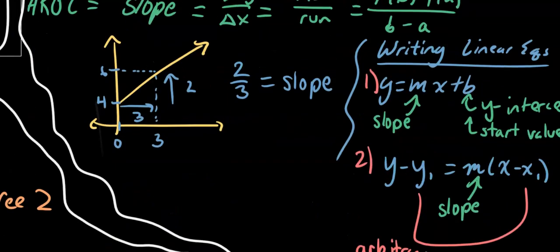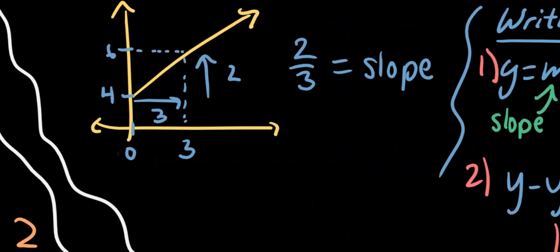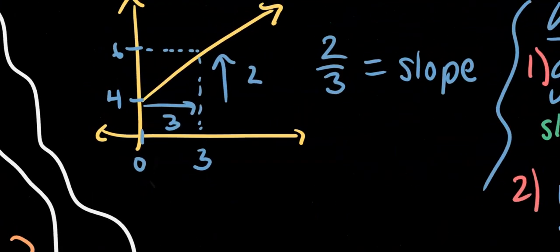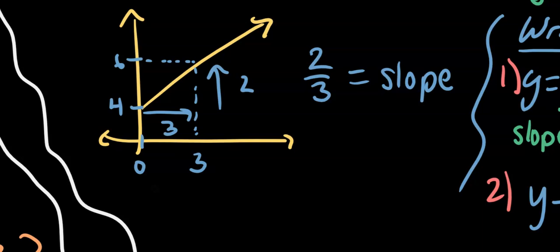Let's take this example here. We have two points — (3, 6) and (0, 4). Our change in y is positive 2 and our change in x is positive 3, so our slope is 2/3 because we have that change in y over change in x.